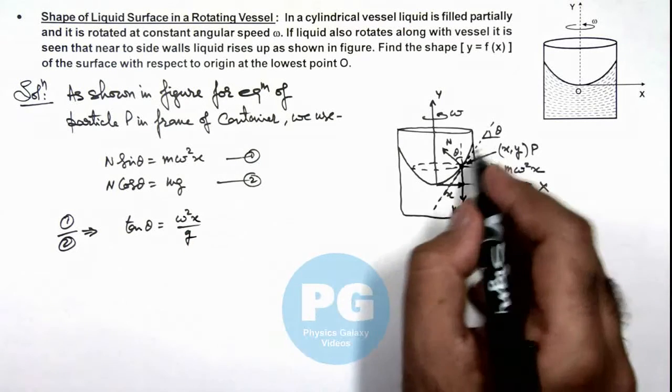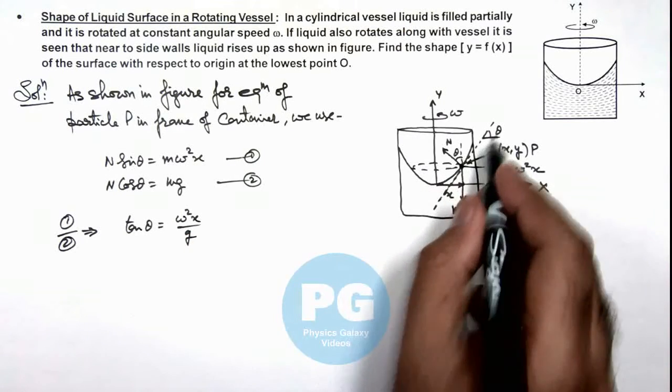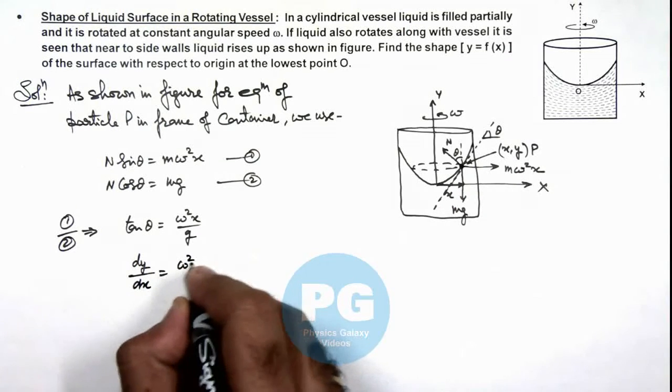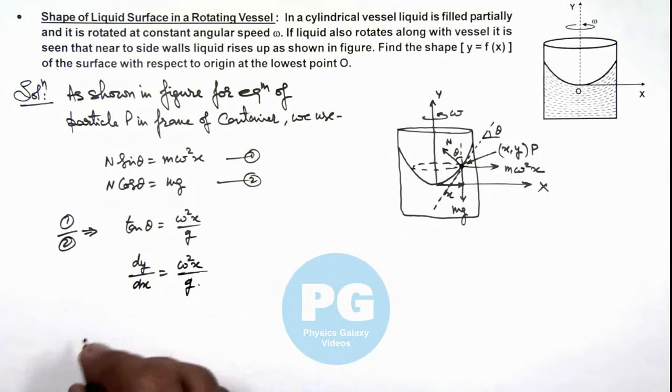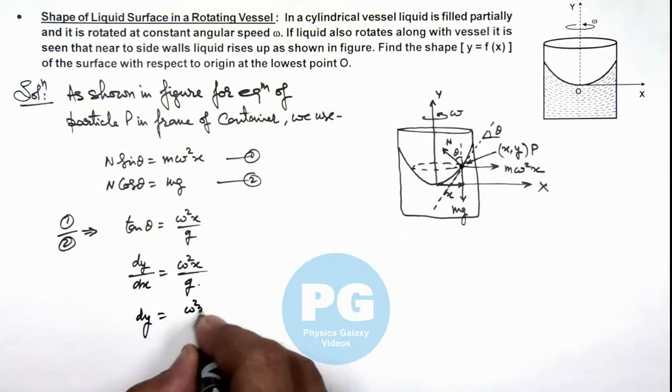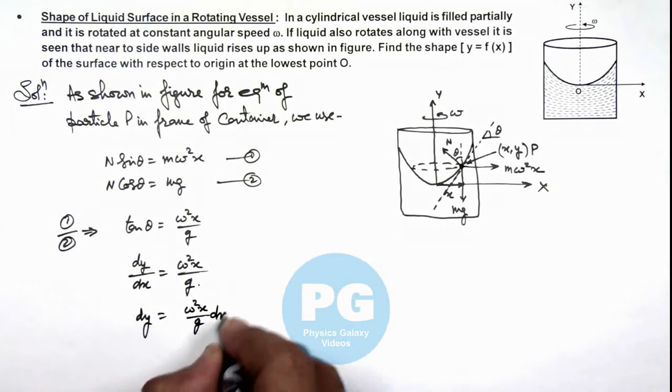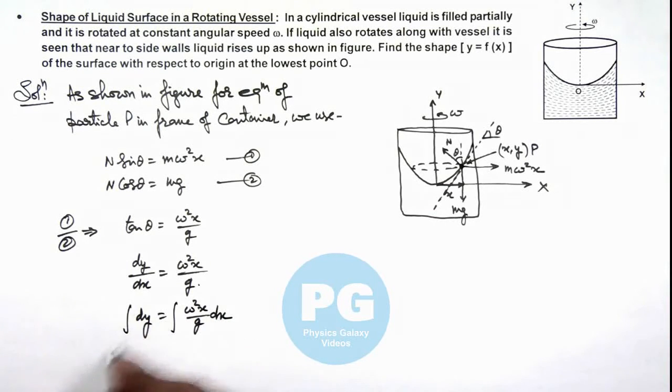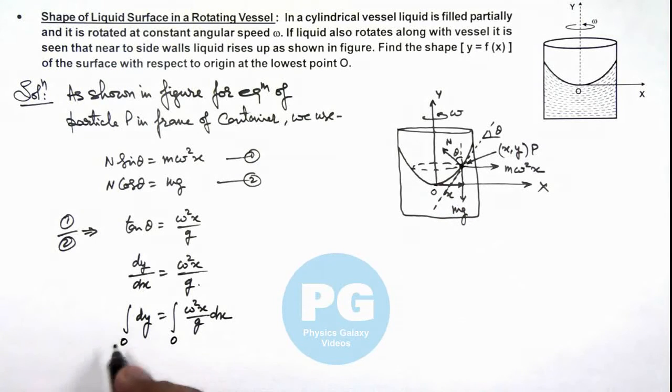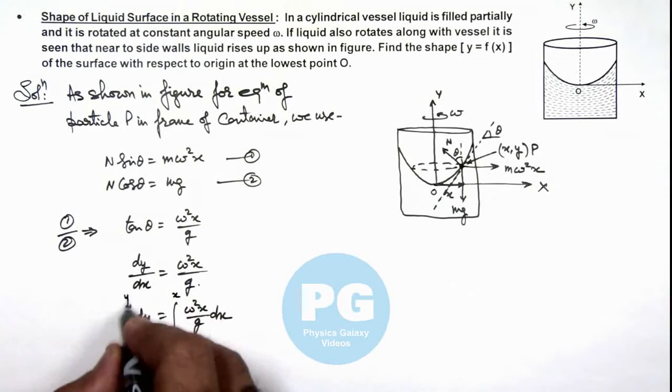And in this curve we can write down the slope tan(theta) as dy/dx for this curve which is omega^2*x/g. And here we can write dy = omega^2*x/g*dx. And if we integrate it, at point O, x was zero, y was zero, and at point P, x and y are the coordinates.